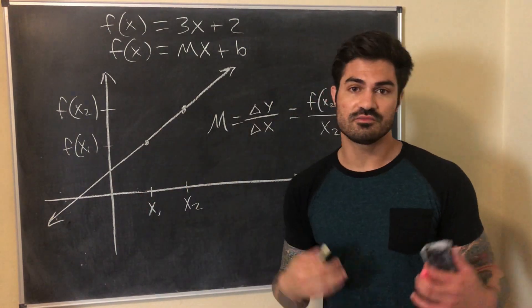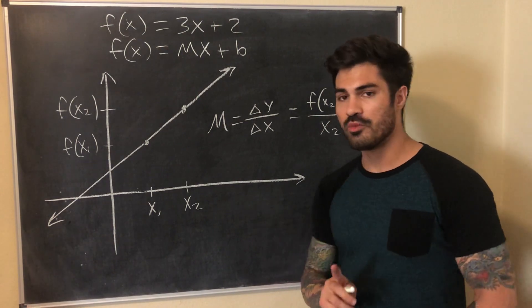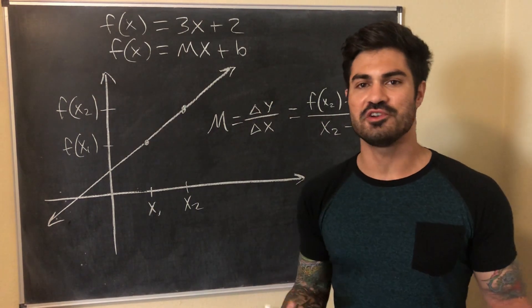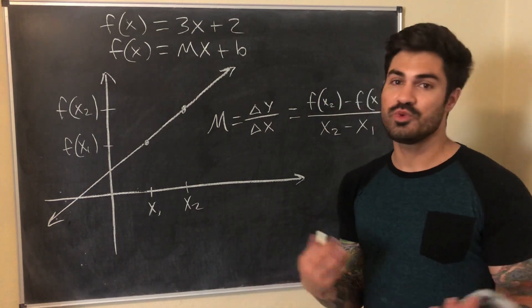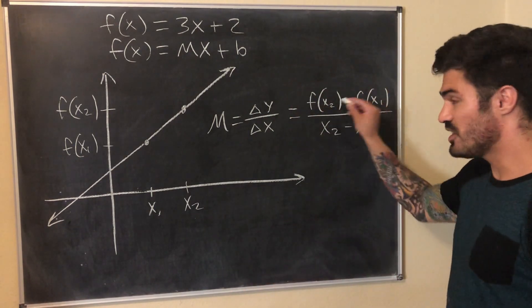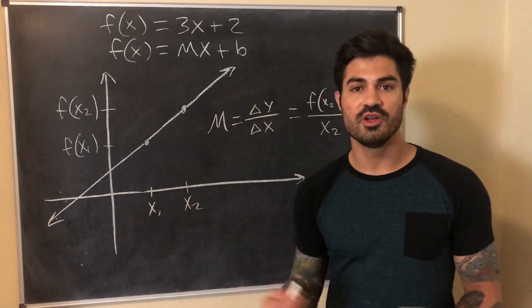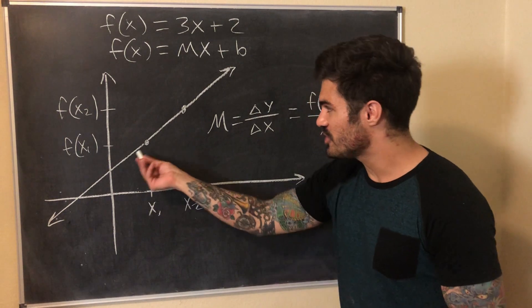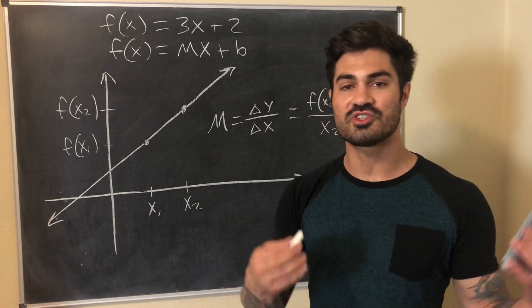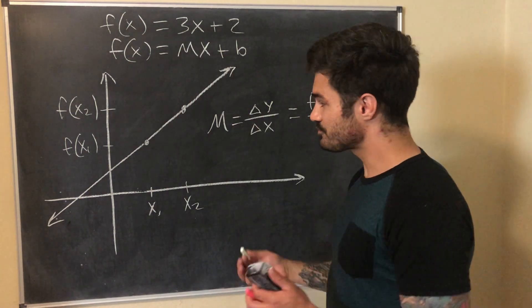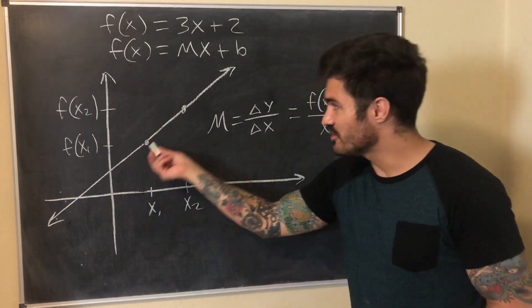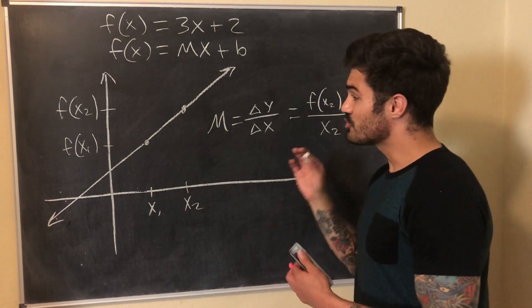This gives us the slope of the function just by picking any two points from the graph. What's interesting is that this Δy/Δx equation is also used to find average rate of change. The average rate of change between the points (x1, f(x1)) and (x2, f(x2)) is given by this same expression — which in this case equals the slope of the function. Why? Because linear functions have a constant slope — some real number like 3, 5, or negative 2 — so no matter which two points we pick, the average rate of change just gives us that constant slope.